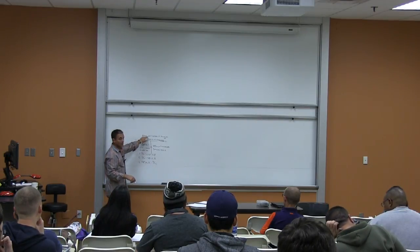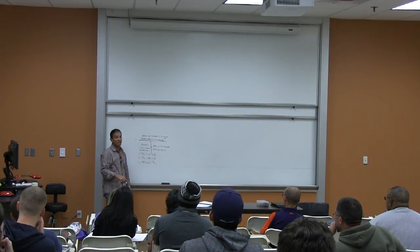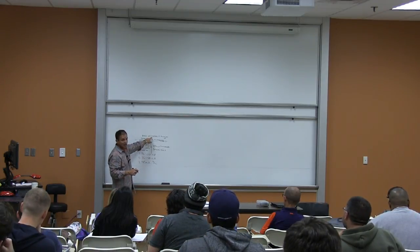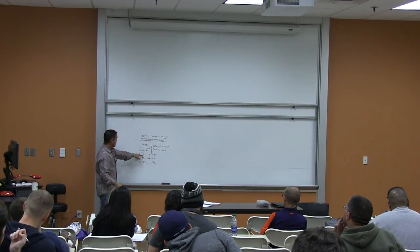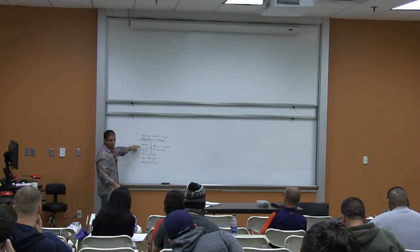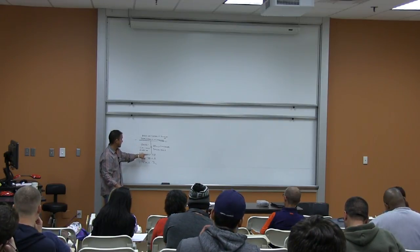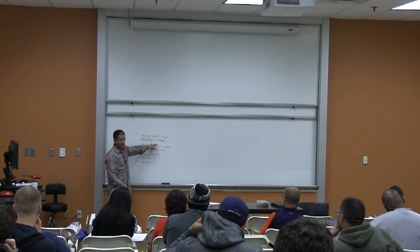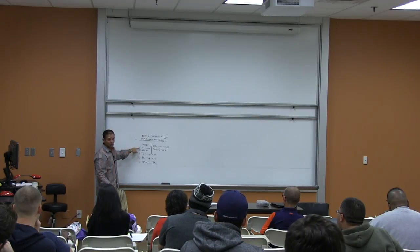Any time you have a variable on the top of the T and one on the bottom, you're always going to divide those to get the unknown. If you have both variables on the bottom, you're going to multiply those to get the top variable, which is the unknown. For example, total commission divided by commission rate equals sale price — top divided by left equals the right.